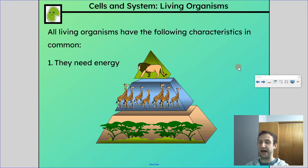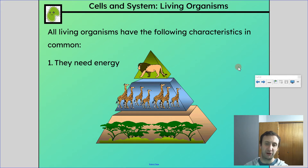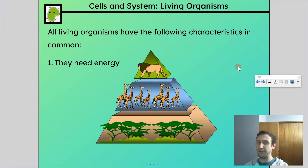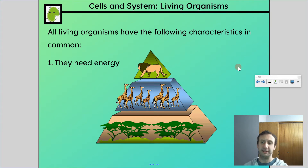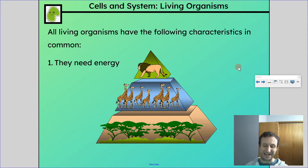If you're talking about that lion, it's getting energy by eating other animals. A herbivore like the giraffe is getting energy from eating plants. A fungus like a mushroom gets energy from the thing it's growing on. There are different ways of getting energy, but at the end of the day all living things need to get energy in some way.